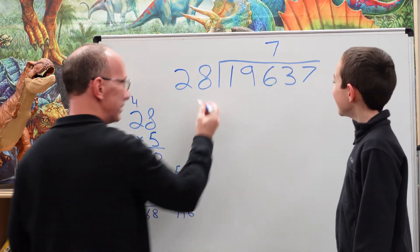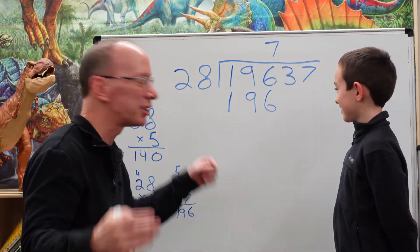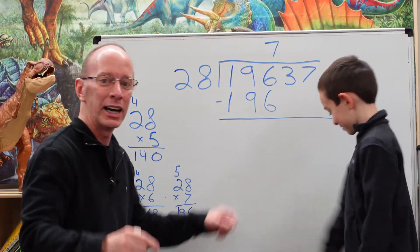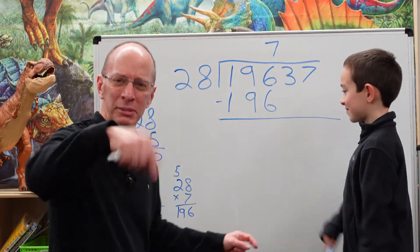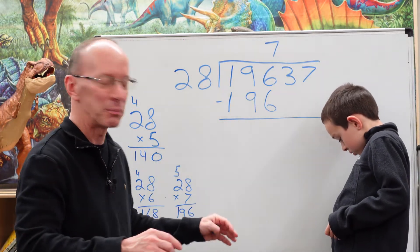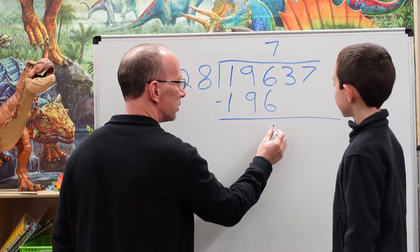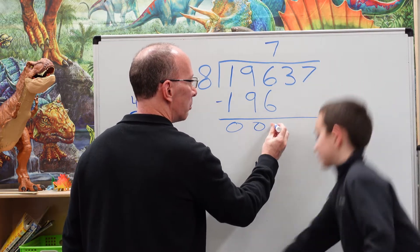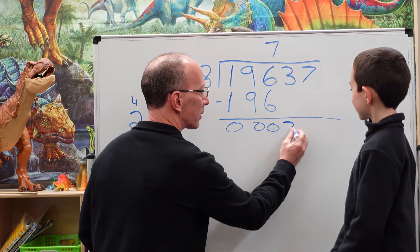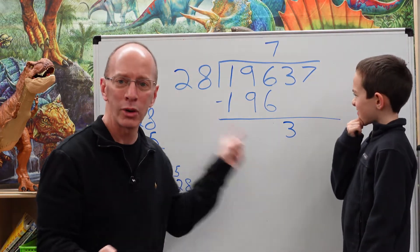Seven — we put seven right there. Seven times 28 is 196. Doing problems like this is like a challenge or a puzzle — it's just fun to do. So we go ahead and subtract. Our friend Finn, he loves doing these type of problems, so look for him down in the comments below. Anyway, after subtracting, this comes out to zero. Now we have to drop that next number down, which is a three.